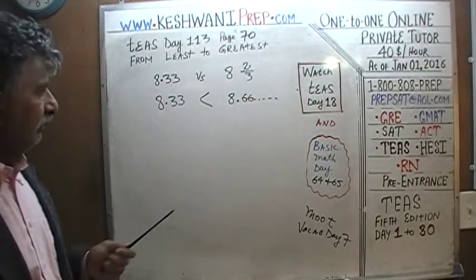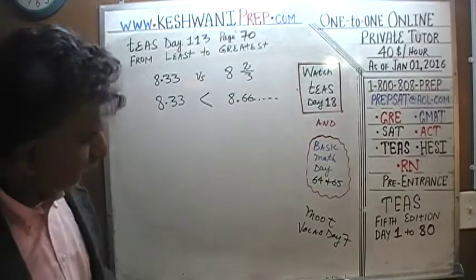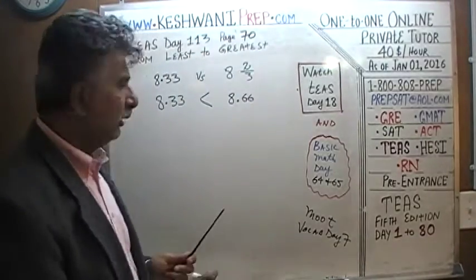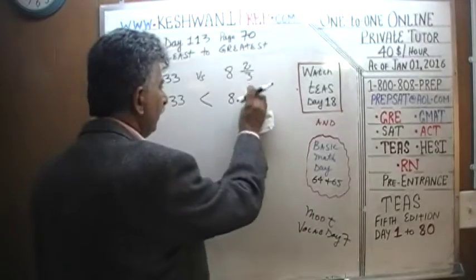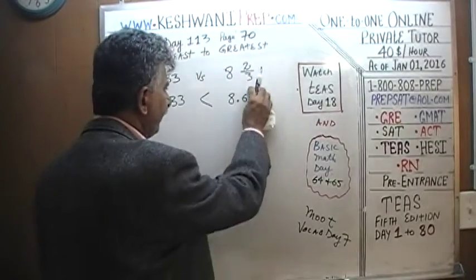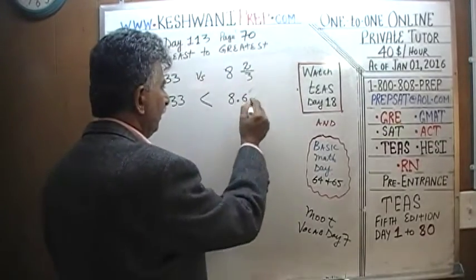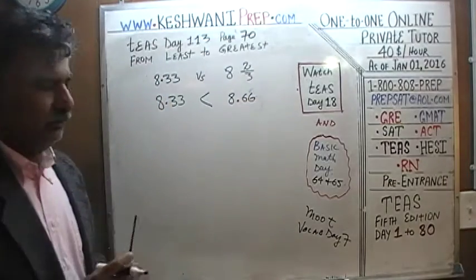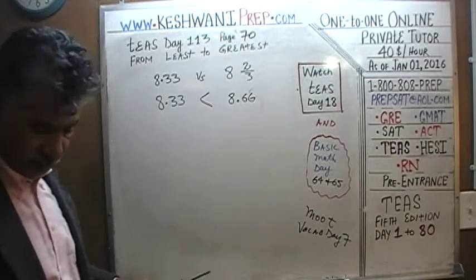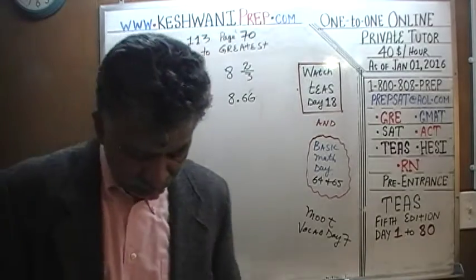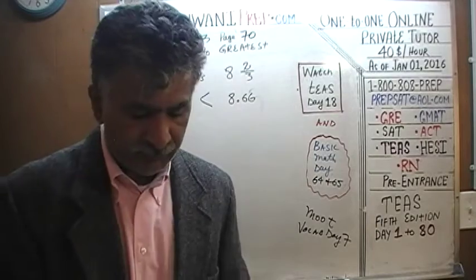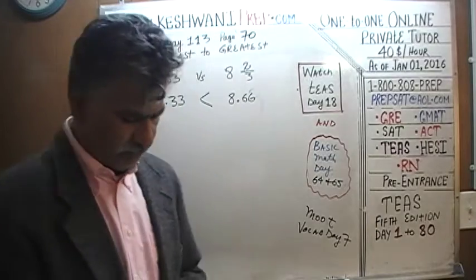We don't have to go too far. We can stop at two digits if you want, or round it to 8.67. It doesn't really matter. You can leave it like this or go on. 8.33 is of course less than 8.66. The question is which one of the answer choices is the right answer. Let's take a look at them one by one.